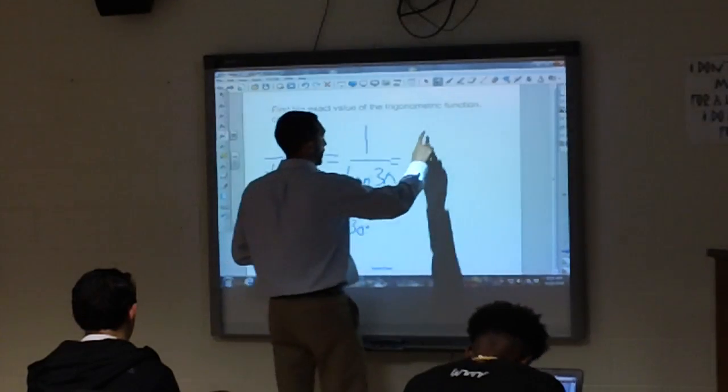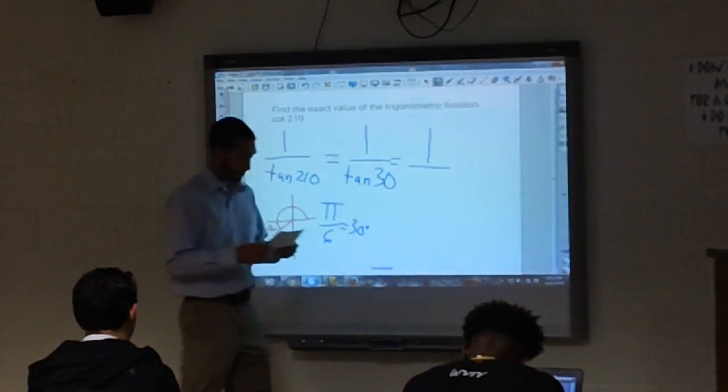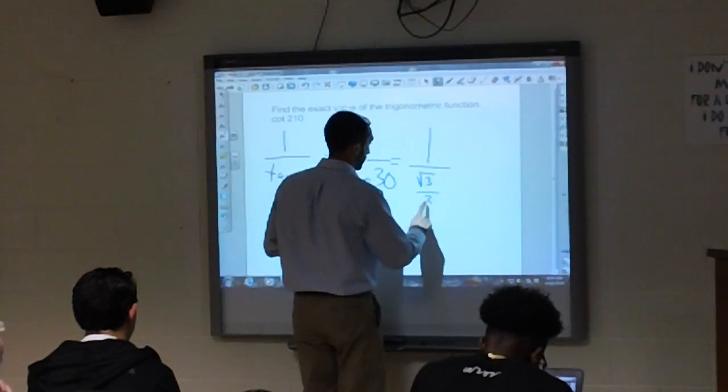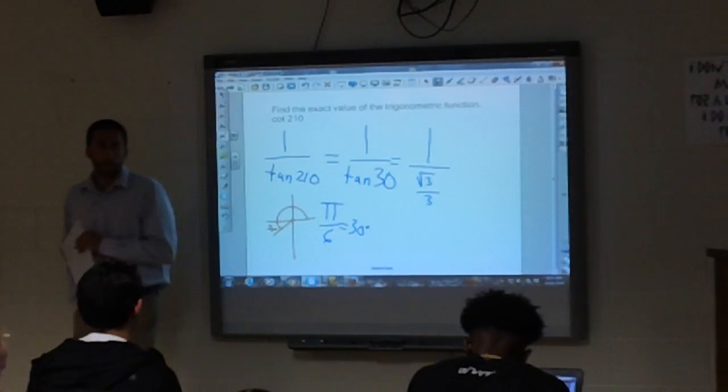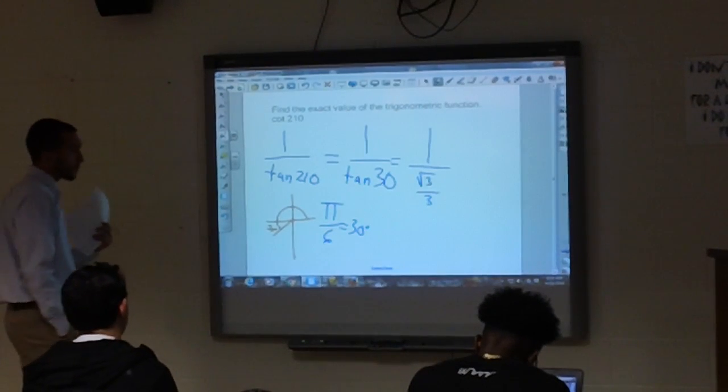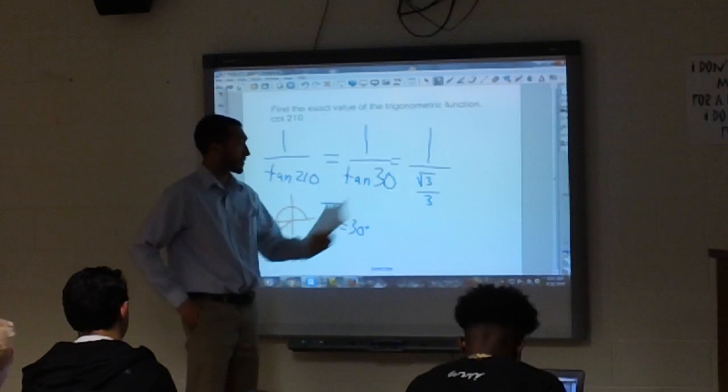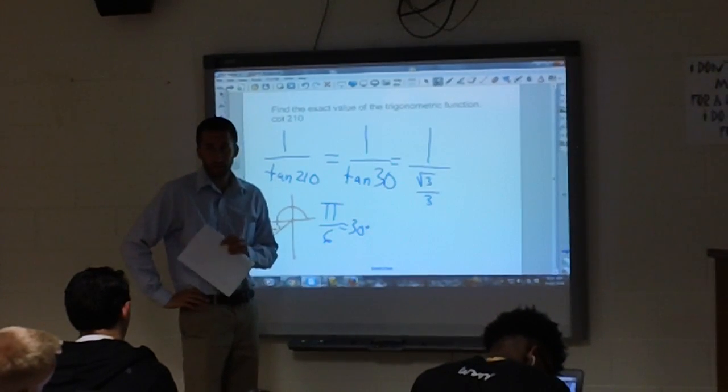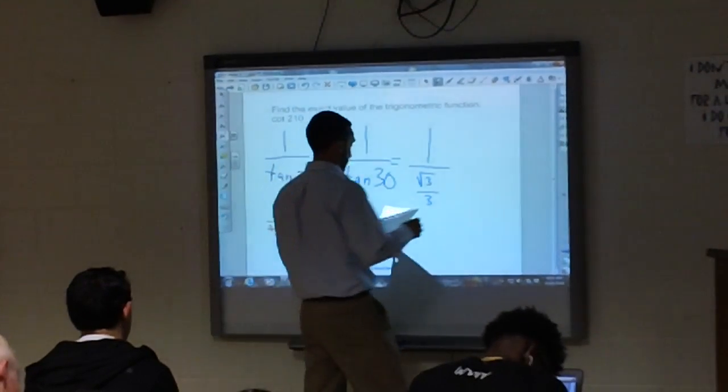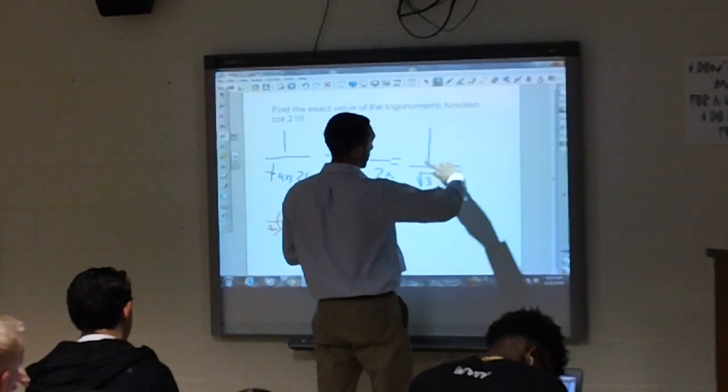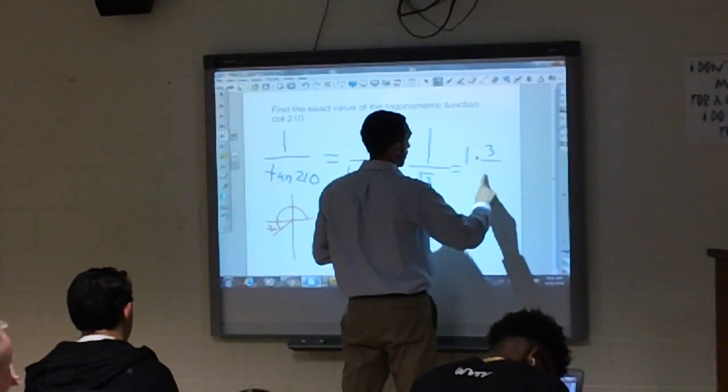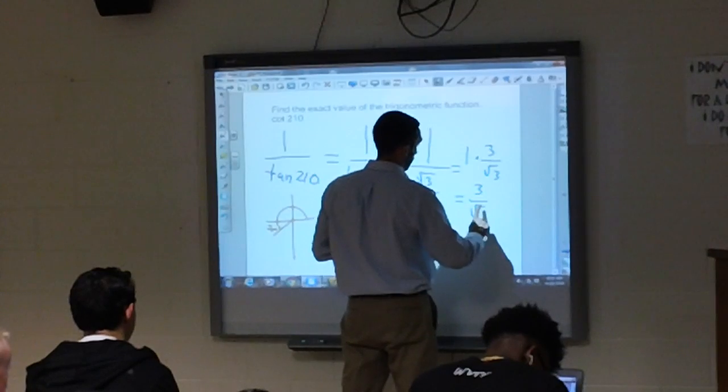So then we've got 1 over tangent of 30 is radical 3 over 3. Remember, we don't have that memorized. At least you should have the sine and the cosine memorized, so you can go back and work it through to get your tan of 30. And then we don't want to have a crazy looking fraction like that, so we flip and multiply. It's going to be 1 times 3 over radical 3, so we're going to get 3 over radical 3.